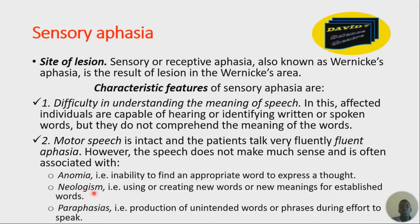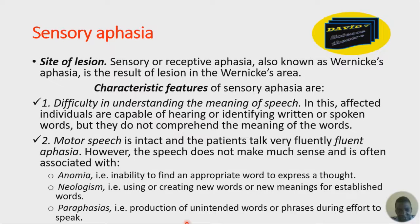That is anomia. Then we have neologism — this is using or creating new words, or new meanings for established words. The words are there, but you have a different meaning for them. We have paraphasia — this is production of unintended words or phrases during the effort to speak. So, these three — anomia, neologism, and paraphasia — come along with fluent aphasia, because we had a lesion in the Wernicke's area.